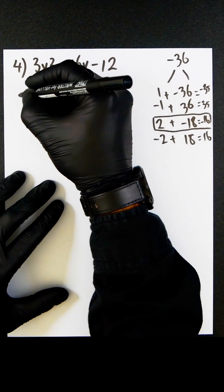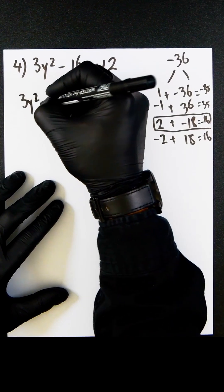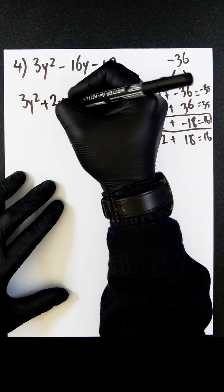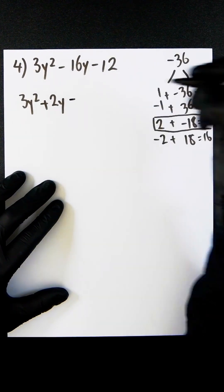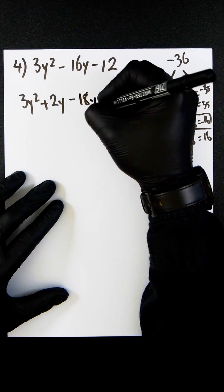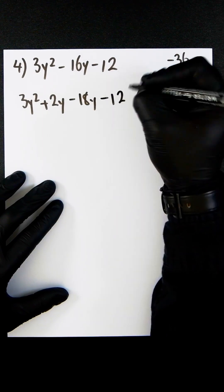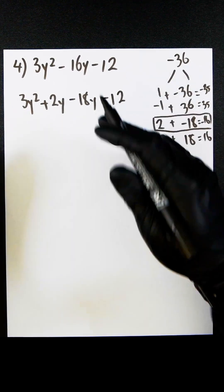So now we write 3y² plus 2y minus 18y minus 12, and we can then factorize these individually.